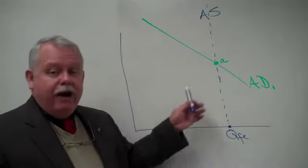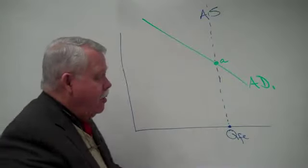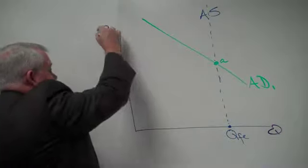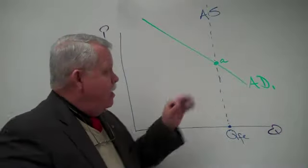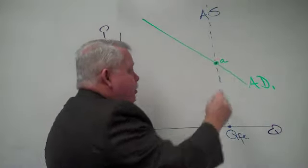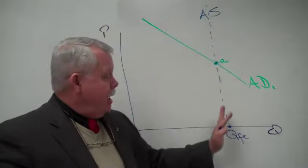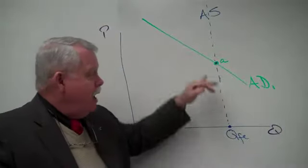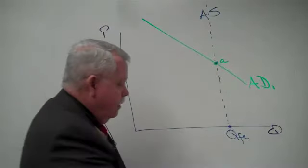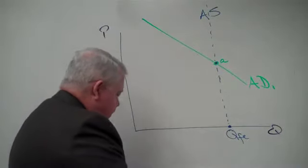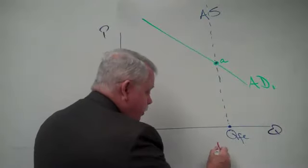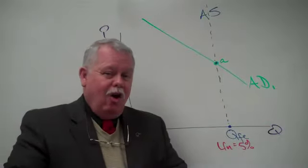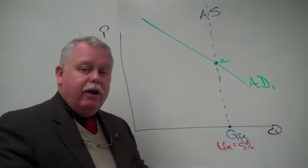Recall, we have an aggregate demand, aggregate supply model with GDP, I'm calling it Q, and with the price level or rate of inflation up here. And we have an initial equilibrium, intersection between aggregate demand and that vertical supply curve at point A. So we're going to start this economy out at full employment. The unemployment rate down here, remember what that was? The unemployment rate is 5%.